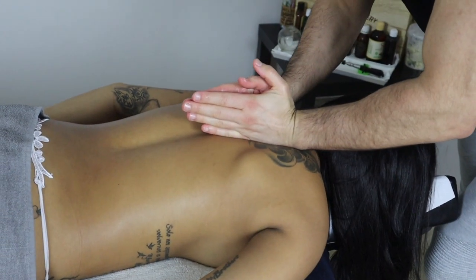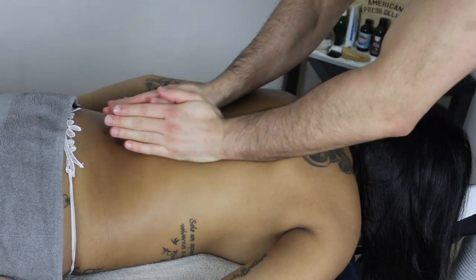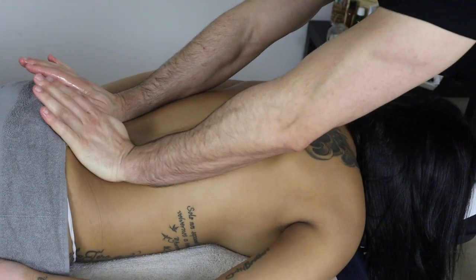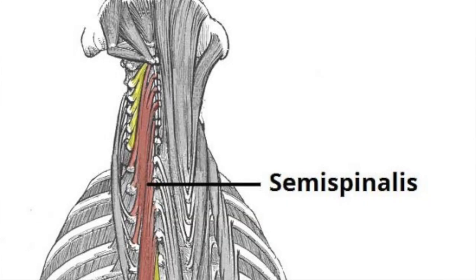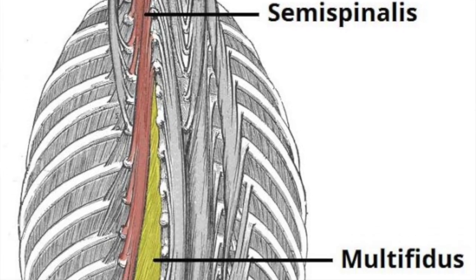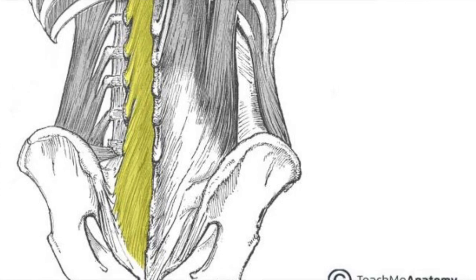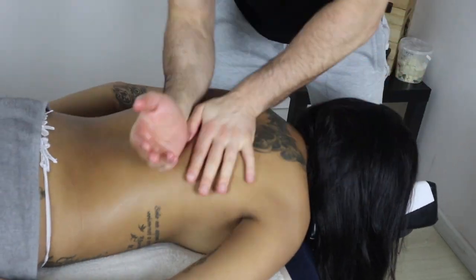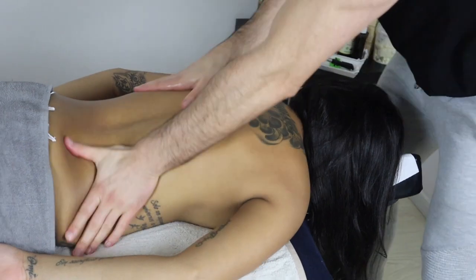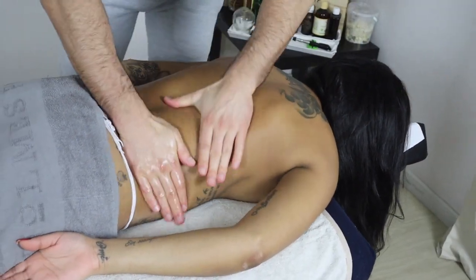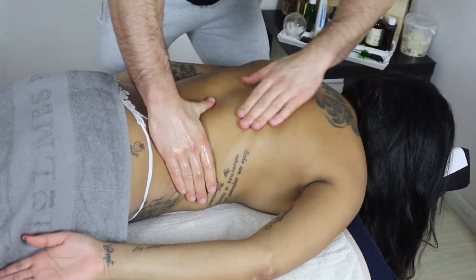Furthermore, I consider the deep muscles posterior to the erector spinae — they are short muscles associated with the spinous and transverse processes, such as semispinalis, multifidus, and rotatores. So the back is full of muscles that are not visible because of the big ones — latissimus dorsi and traps — but you're working on those deeper muscles too.